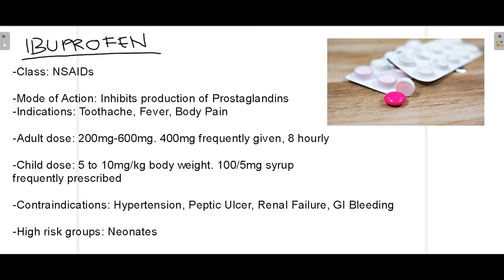The main indications for prescribing ibuprofen in dentistry are toothache and fever with body pain — since severe pain can also cause fever, in which case antibiotics are also prescribed. For adults, the dose is 200 mg to 600 mg; 400 mg given every 8 hours (2–3 times a day) is most common. For children, the dose is 5–10 mg per kg body weight, most commonly given in syrup form — 100 mg per 5 ml — because children have difficulty swallowing pills.